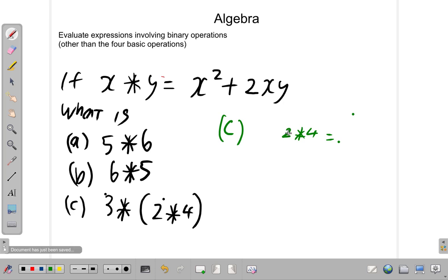2 star 4 is equal to, X and 2 are in the same position. X looking from left to right. X is at the front, 2 is at the front. So, the 2 is going to be whatever happens to the X on the right. So, it's 2 squared plus 2 times X which is 2 times, then the Y. Y comes second on the left and it's on the right.